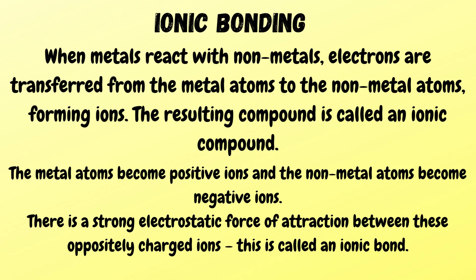Ionic bonding: when metals react with non-metals, electrons get transferred from metal atoms to non-metal atoms, producing an ionic bond. This compound is called an ionic compound. The metal atoms become positive ions and non-metal atoms become negative ions. This strong electrostatic force of attraction between positive and negative ions is called an ionic bond.